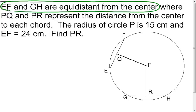Now, if they're equidistant from the center, that's talking about the distance to the center. Notice it's telling us that segment PQ and segment PR, those lengths are representing the distance. Well, if that's the case, that means that we have to have a right angle here.